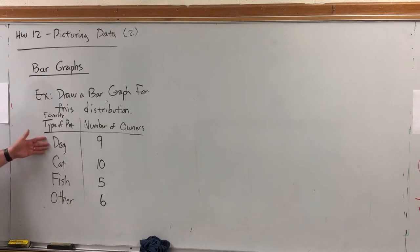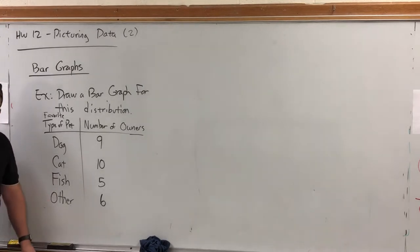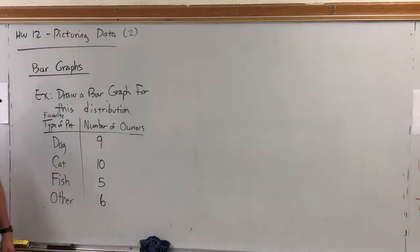And our four categories are dog, cat, fish, and other. It's not uncommon to have an other category to pick up the people that have unique answers, like lizard, or sugar glider, or hedgehog. And of course, we have the number of owners, which corresponds to the frequencies. Nine people said dog, ten people said cat, five people said fish, six people said other.